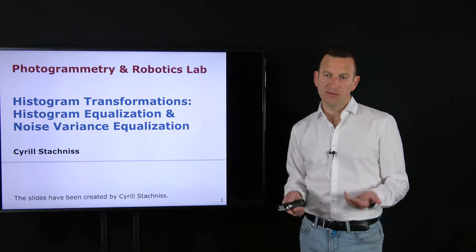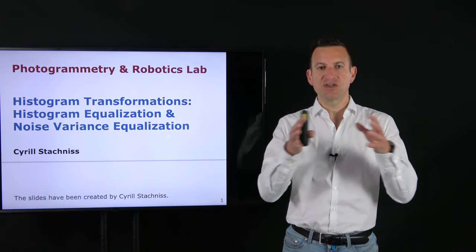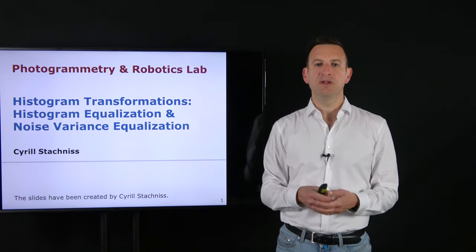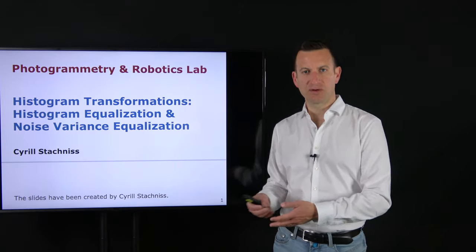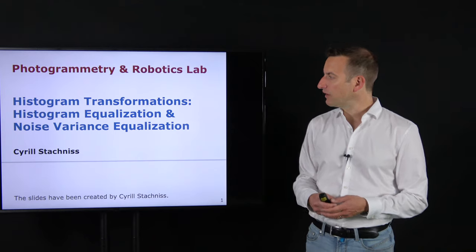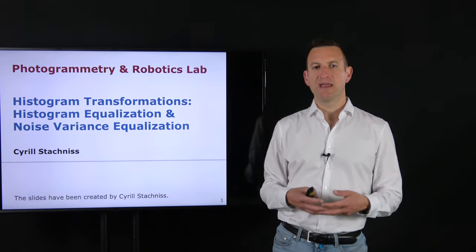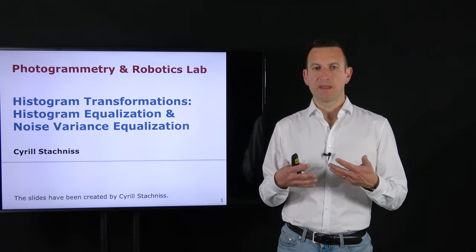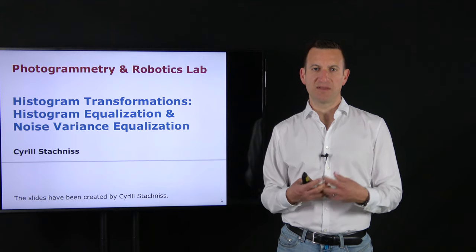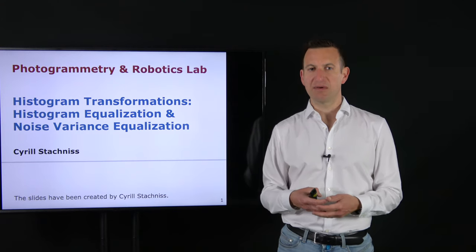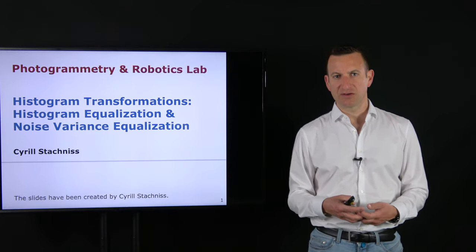Histogram equalization takes all the intensity values in an image and distributes them uniformly over the range of intensity values, typically from 0 to 255. Noise variance equalization modifies the image so that the uncertainty about the intensity value of every pixel measurement is the same — every pixel has the same uncertainty about the measured intensity, which is not the case for a standard camera.